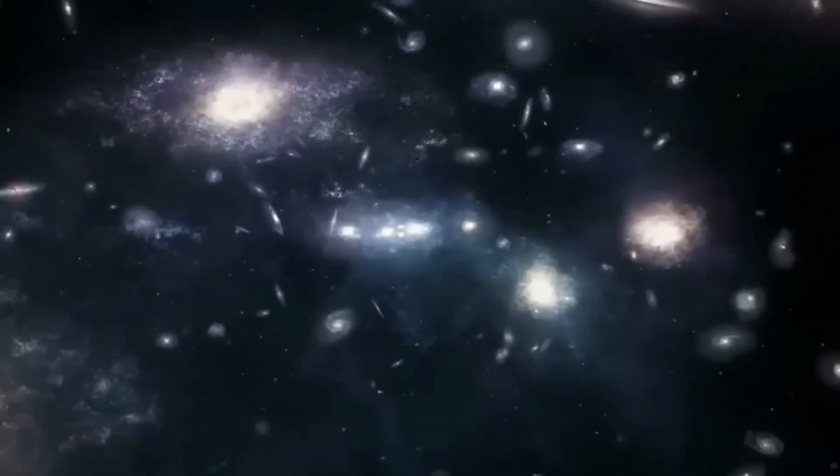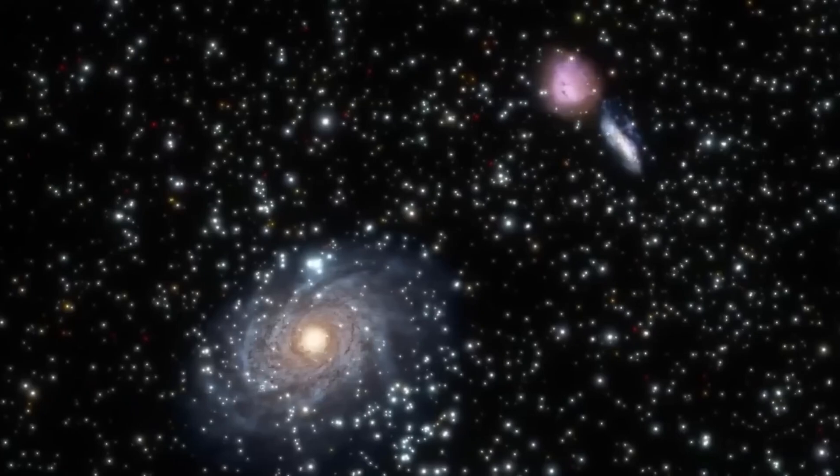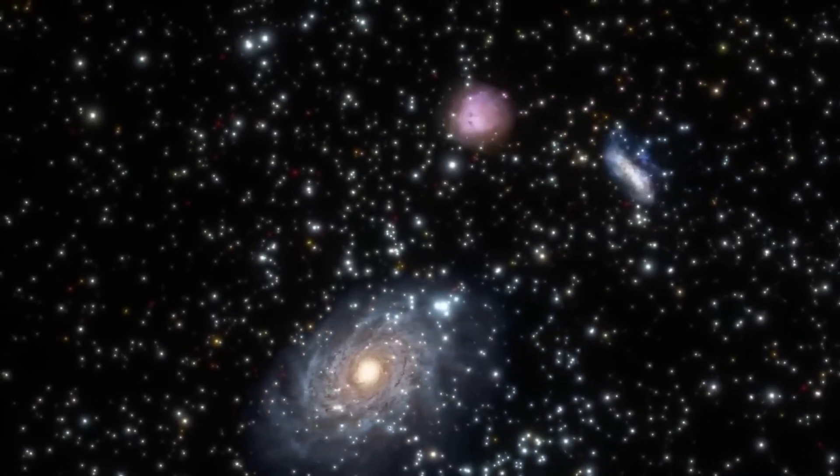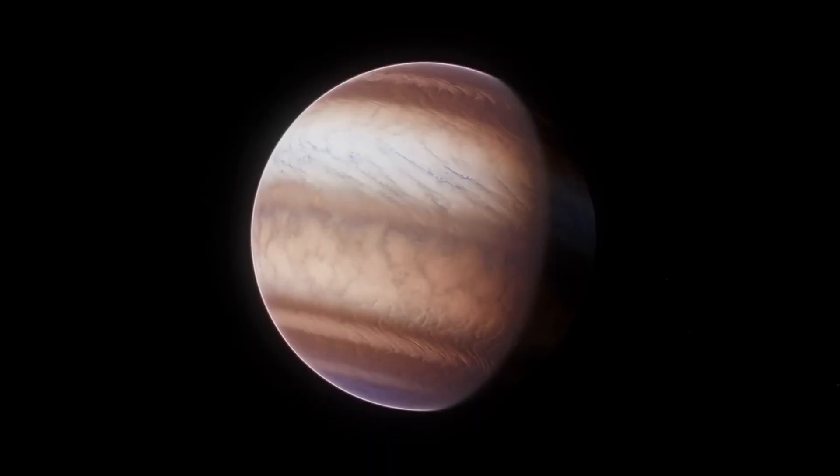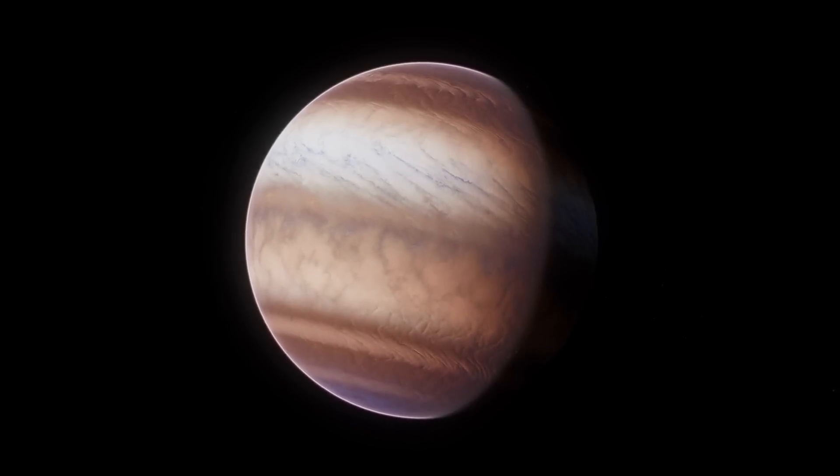In principle, there are very few direct images of exoplanets to date, and most of them show young, hot gas giants, which can be seen in the infrared as relatively bright points of light.